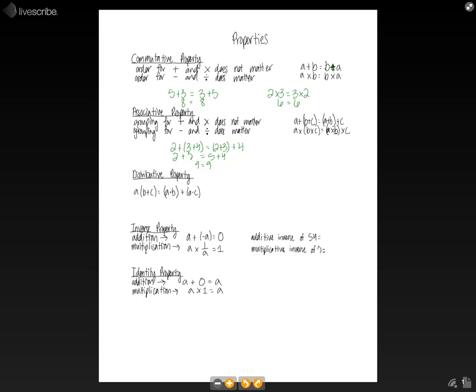And then for multiplication, it's the same thing. We can have 2 times parentheses 3 times 4 is equal to parentheses 2 times 3 and parentheses times 4. So here we're going to get 2 times 12, which is equal to 24. And here we're going to get 6 times 4, which is also equal to 24. And again, for subtraction and division, the order will matter, so you cannot apply the associative property to those operations.